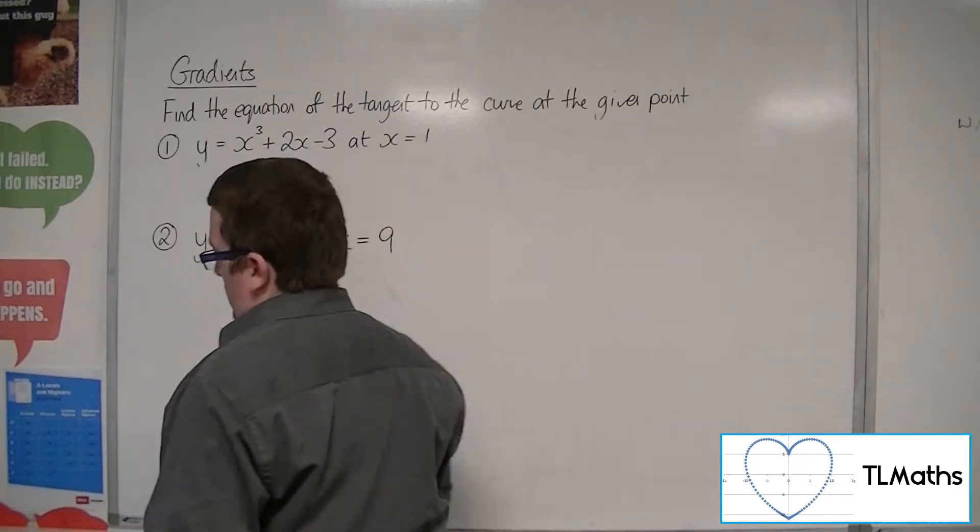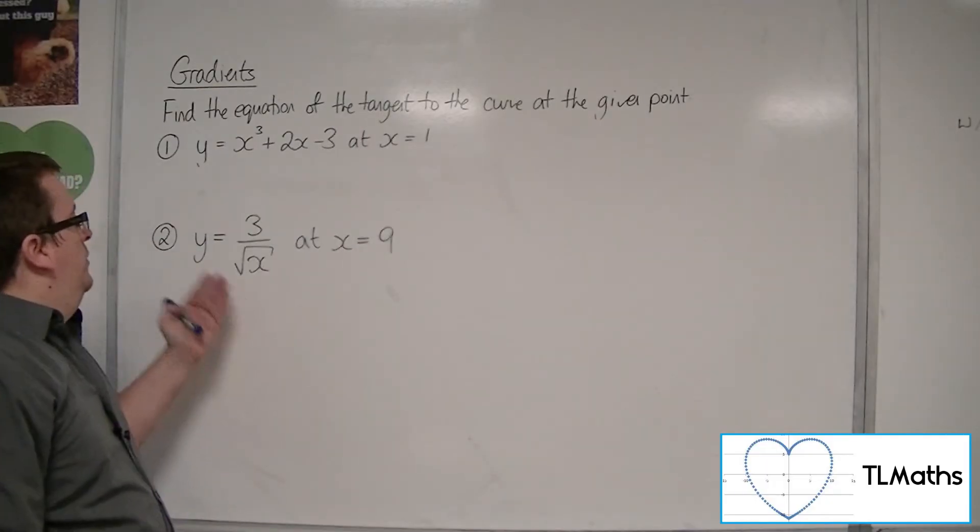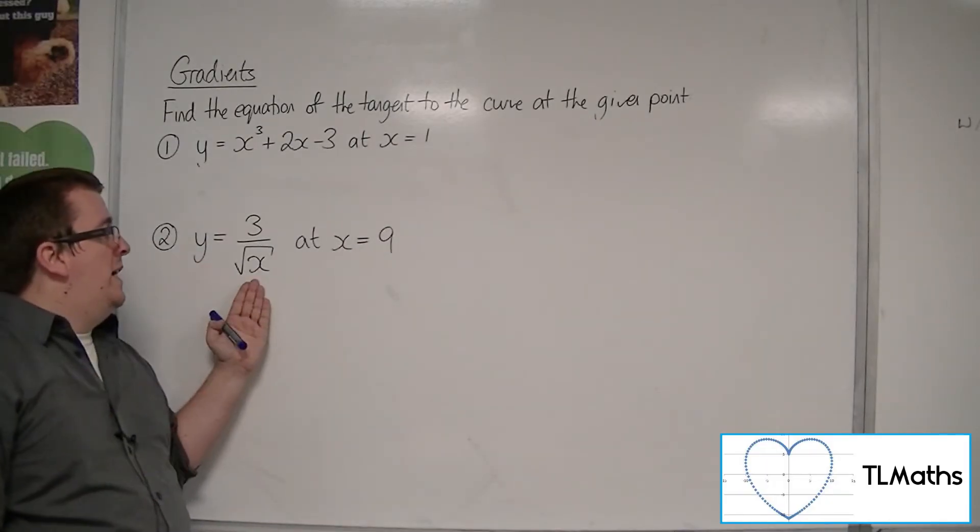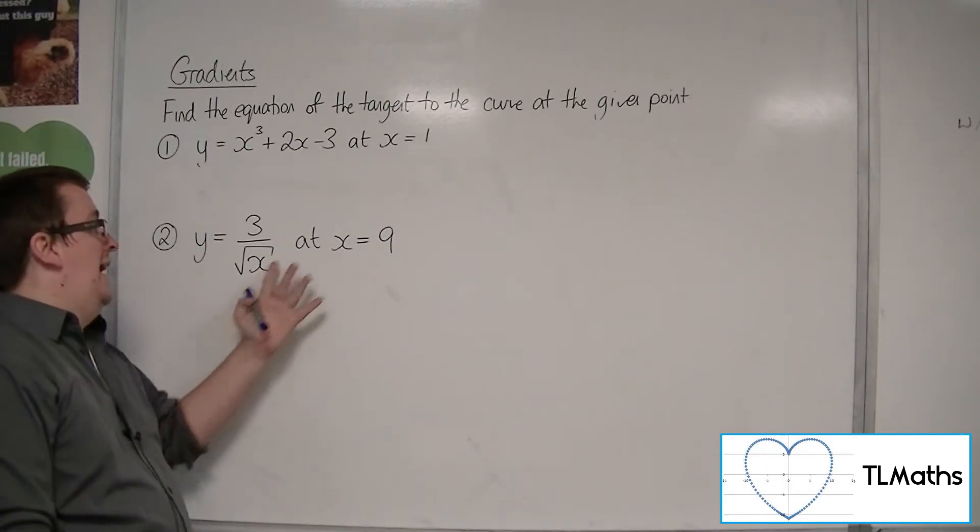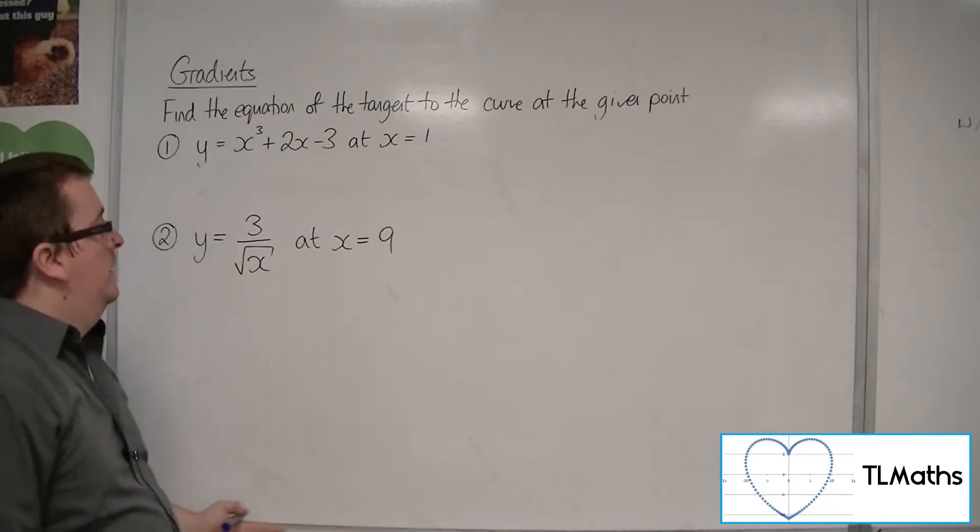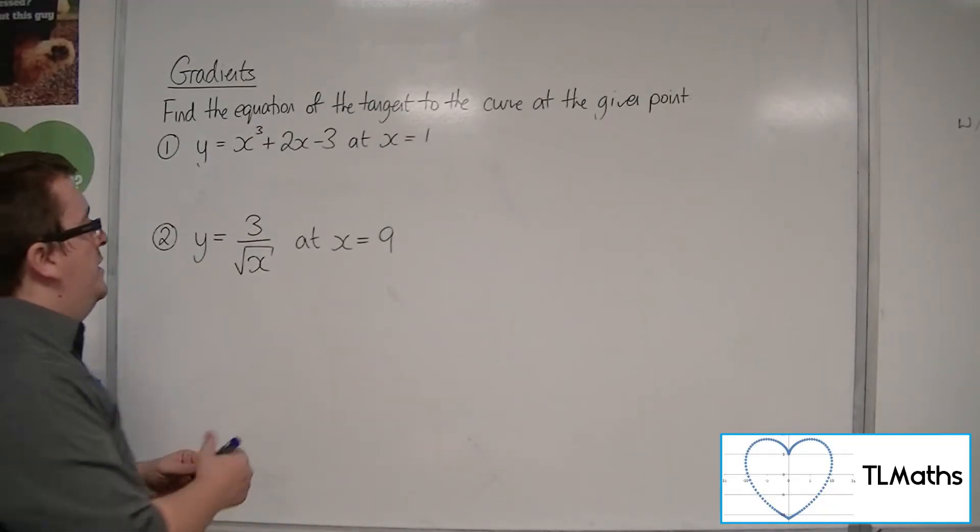Right. Let's have a look at number 2. So now we've got y equals 3 over root x at x equals 9. So first of all, find the y-coordinate that goes with that.